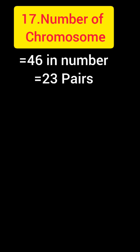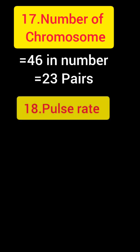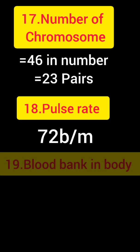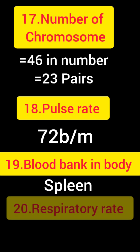Let's move to the next question: pulse rate. The pulse rate is 72 beats per minute. Next question: blood bank in our body. The answer is the spleen — the spleen is the blood bank of our body.